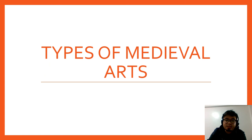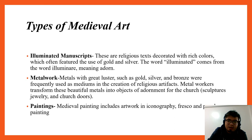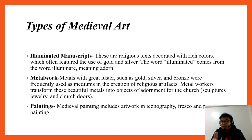Let's look at the various types of medieval arts. First, illuminated manuscripts — these are religious texts decorated with rich colors, often featuring the use of gold and silver. The word 'illuminated' comes from 'illuminate,' meaning adorn. In medieval art, the main focus was Catholicism and Christianity.